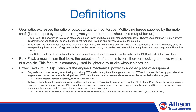Park Pawl is a mechanism that locks the output shaft of a transmission, therefore locking the drive wheels of a vehicle. This feature is commonly used in lighter-duty trucks without air brakes. Power takeoff, or PTO, transmits the engine's mechanical power to another piece of equipment. There are two types of PTO: engine-driven and turbine-driven. Engine-driven PTO uses the engine as the input, making PTO available any time the engine is running. PTO output speed is directly proportional to engine speed. When the vehicle is being driven, PTO output speed can increase or decrease when the transmission shifts ranges. Engine-driven PTO offers greater operational flexibility than other PTO offerings, such as the pump and roll feature.